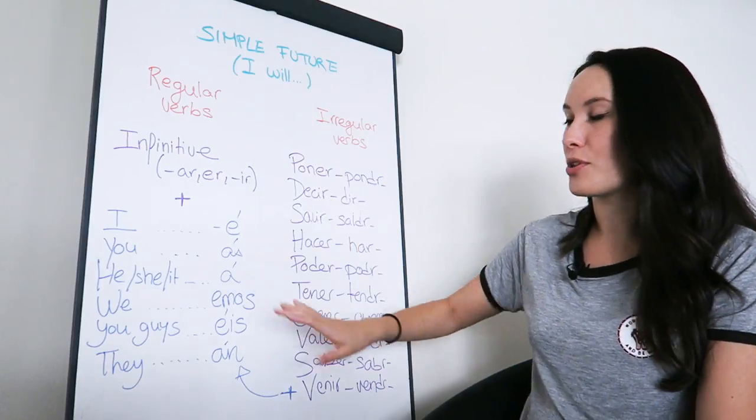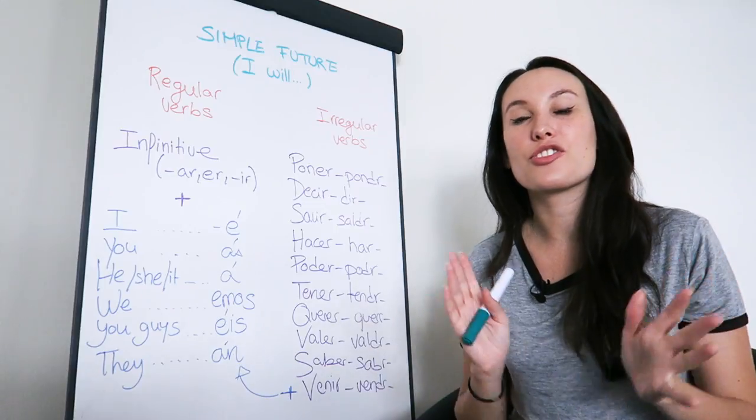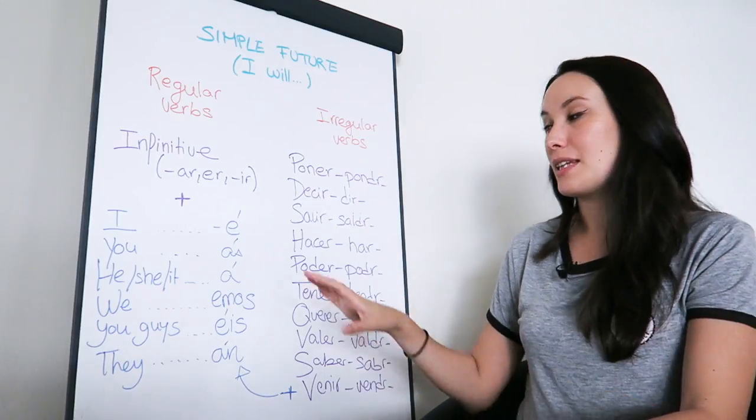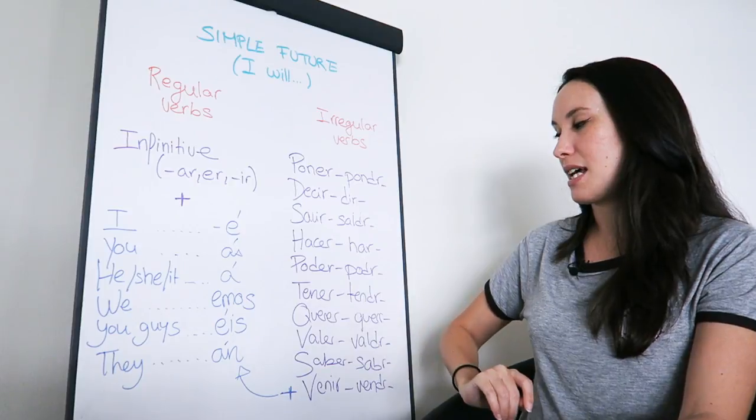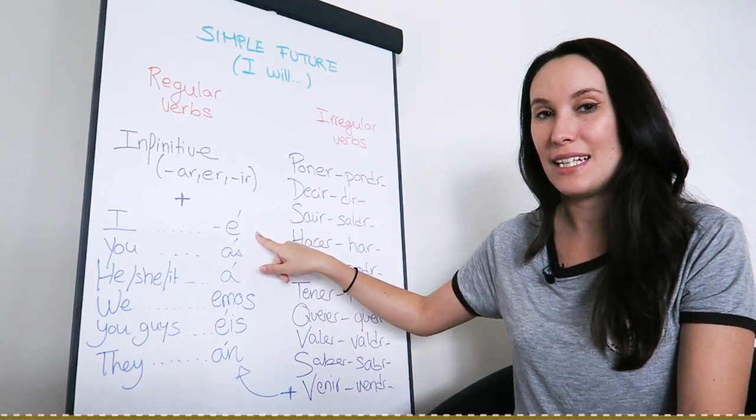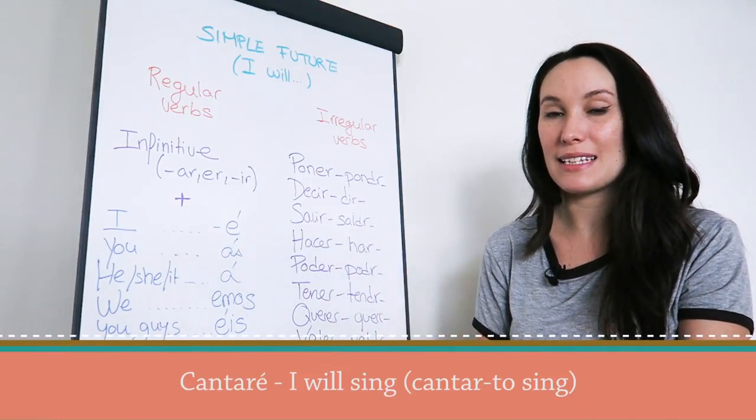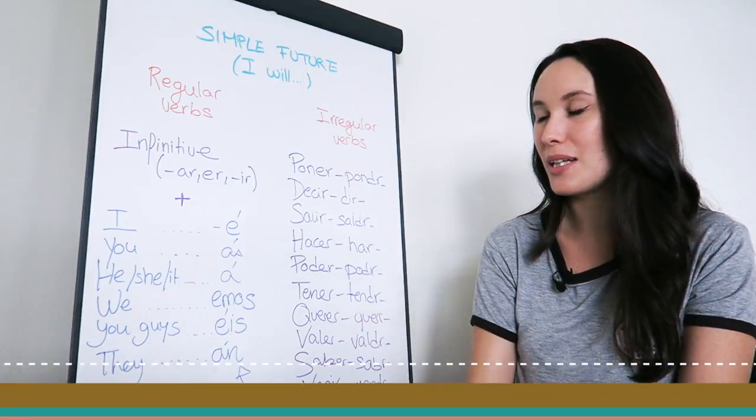So I just have to put this all together. For example, cantar is to sing. If I take that infinitive and then I finish it with this, let's say with e, cantaré. I'm showing it here. I will sing. Cantar is to sing, so I will sing.